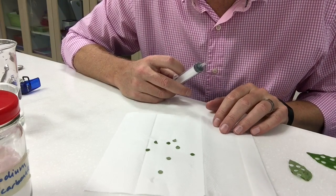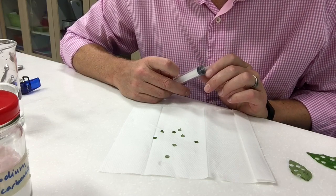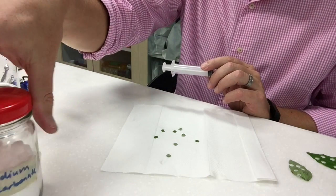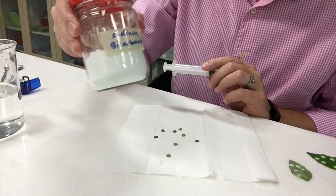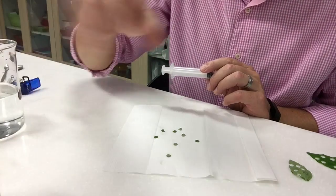So what we're going to do is we're going to use the leaf disc rising method. So what you're going to need for that is you're going to need some sodium bicarbonate, which is going to be the carbon source.